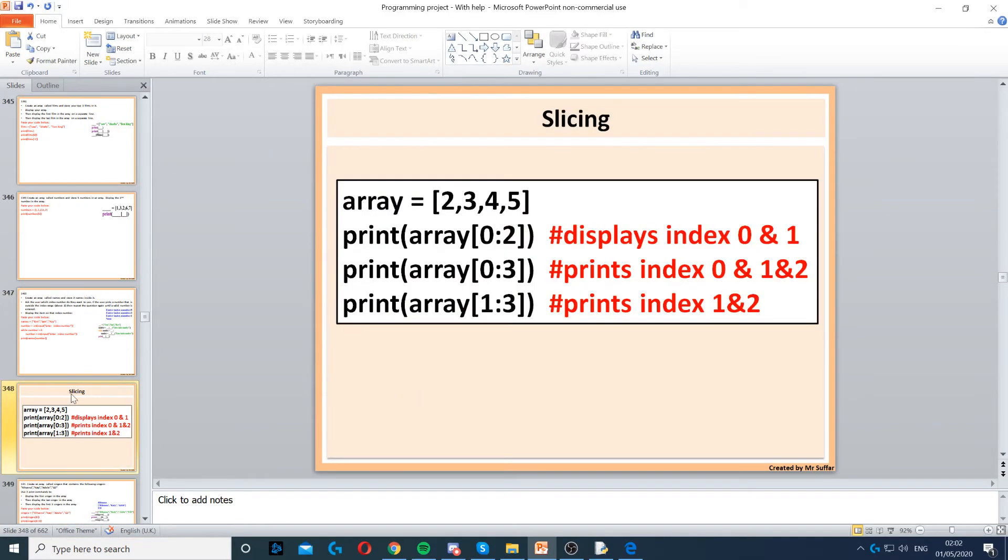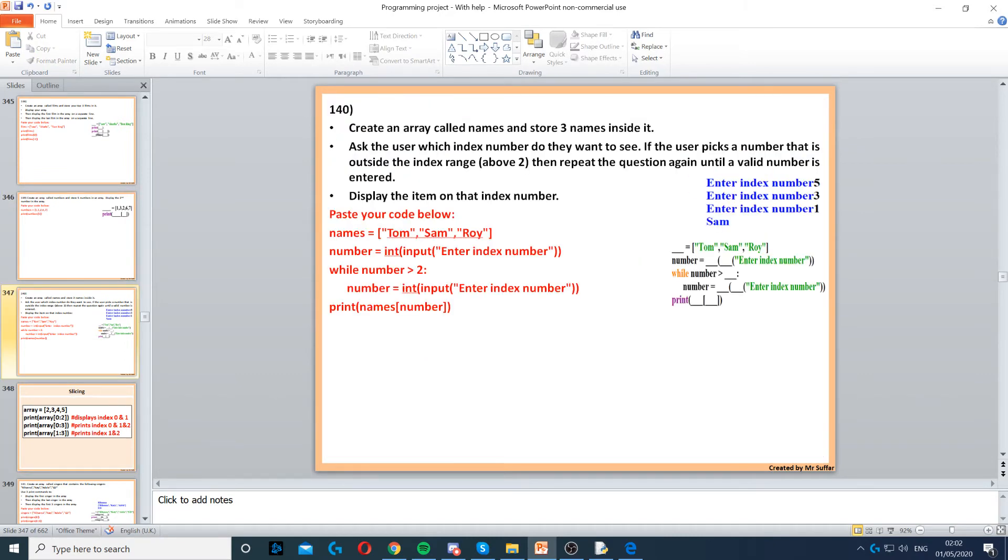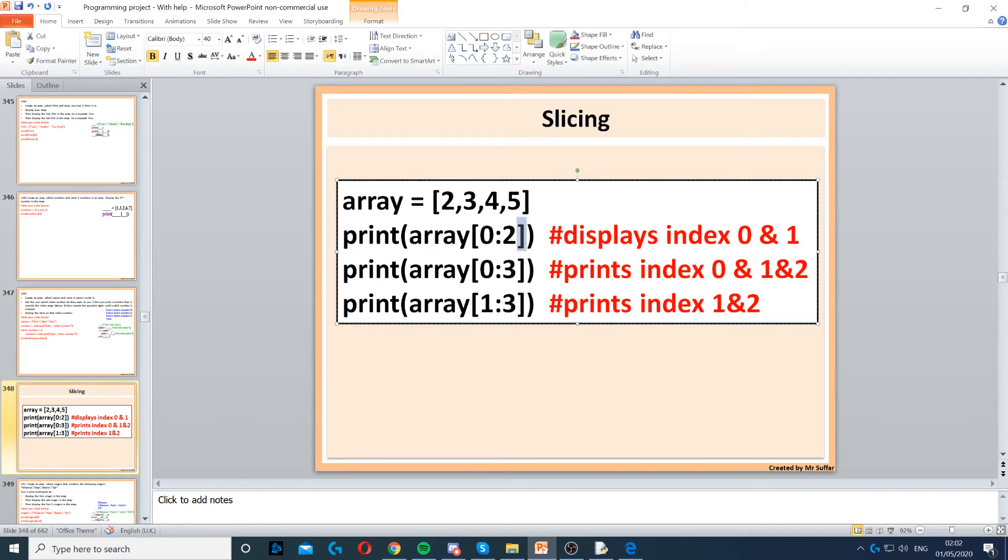You can also display part of the array. If you do 0 colon 2, this will display the first two items in the array, so index 0 and 1. It's up to the second number, so from this first number up to the second number but not including that number.